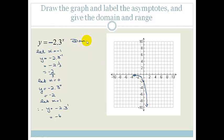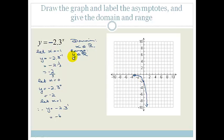Now let's talk about the domain and range. The domain is still x going from negative infinity to positive infinity, so x is an element of real values. For the range: are there any positive y values? No. Does it ever cross the x-axis? No. Therefore y has to be smaller than 0, and the asymptote is at y equals 0.